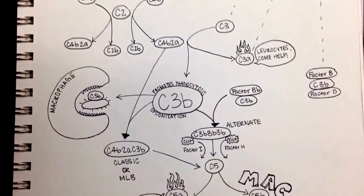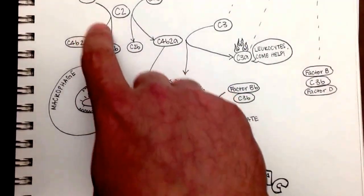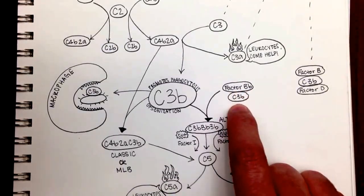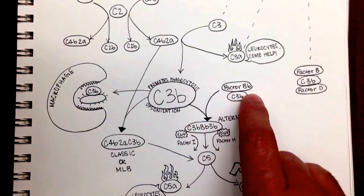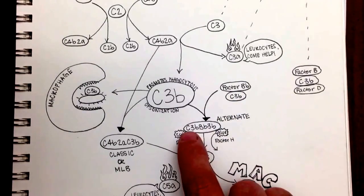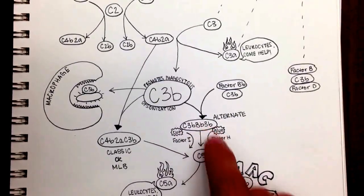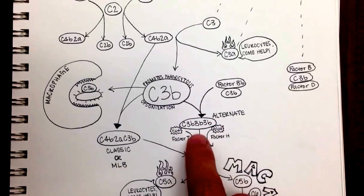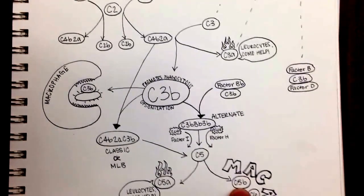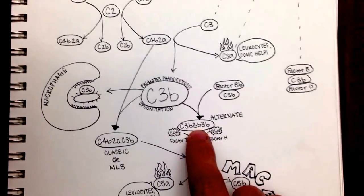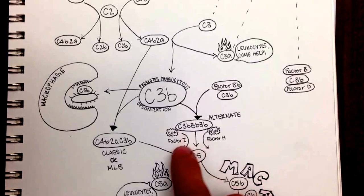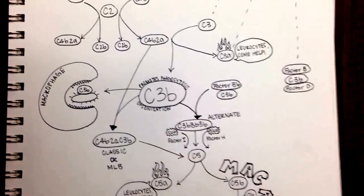So what would happen if it keeps going? Well, the C3b here from the classic or MLB pathway can meet up with this factor BB, C3b that we made over here, and they can join. So we're going to get a C3b, BB, C3b, which is where we get this name, C3bBbC3b. And this guy is responsible for cutting C5 into C5a and C5b. Now there are two factors that can modify how this works. Factor H, if that comes in, it helps glue this together and keeps it more stable. Whereas factor I, if it comes in, it will actually cut this apart and stop things.